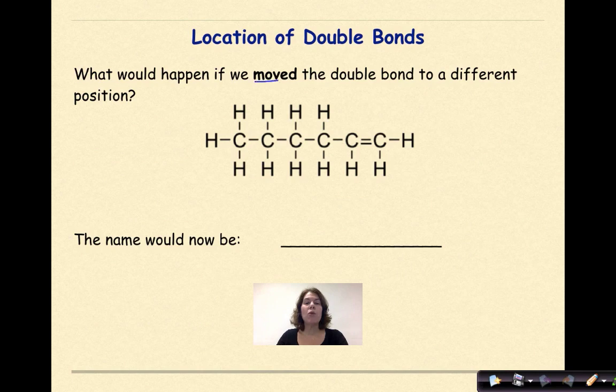What would happen if we moved the double bond to a different position? So again, we have to ask ourselves, if this is my left and this is my right, which end should we start counting from? And again, we're going to start counting from the right. So this is carbon 1, 2, 3, 4, 5, 6.